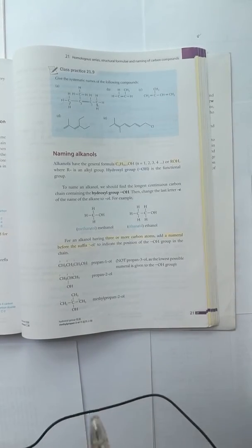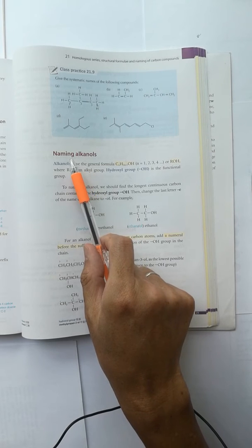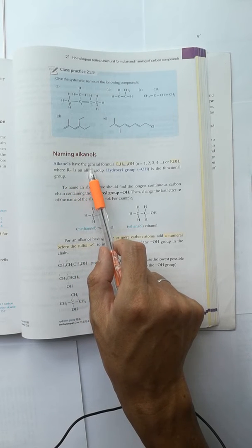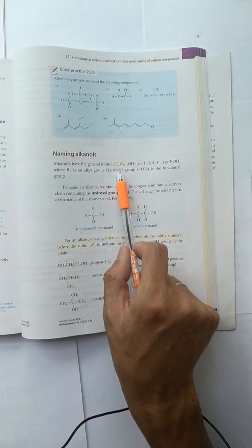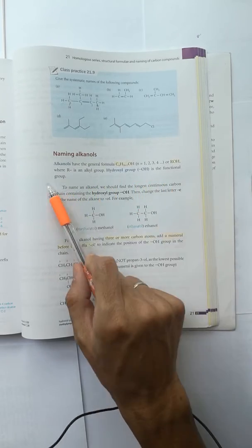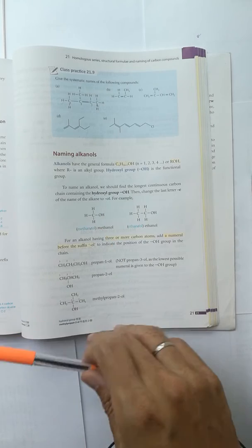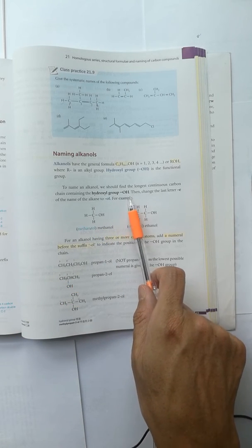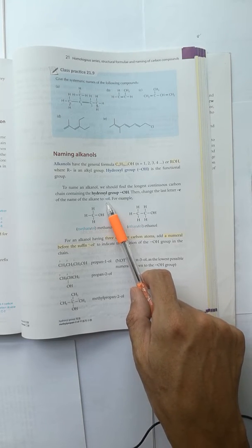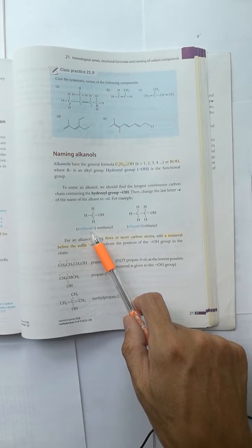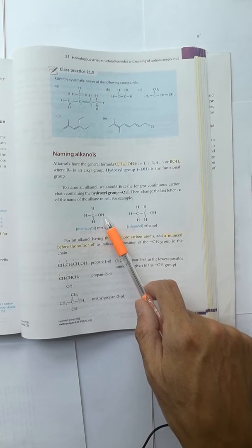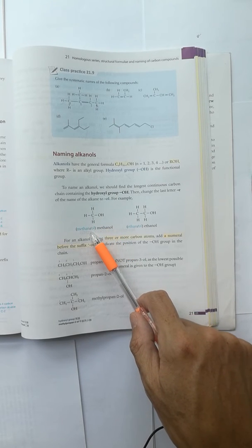Now we continue the naming alkanes. Alkanols have a general formula CnH2n+1OH, and OH is this functional group, the hydroxy group. And the naming of OH, we use OL. OL is a vowel, so we need to omit the E. We add OL for the OH functional group, and since OL is a vowel, E is omitted.